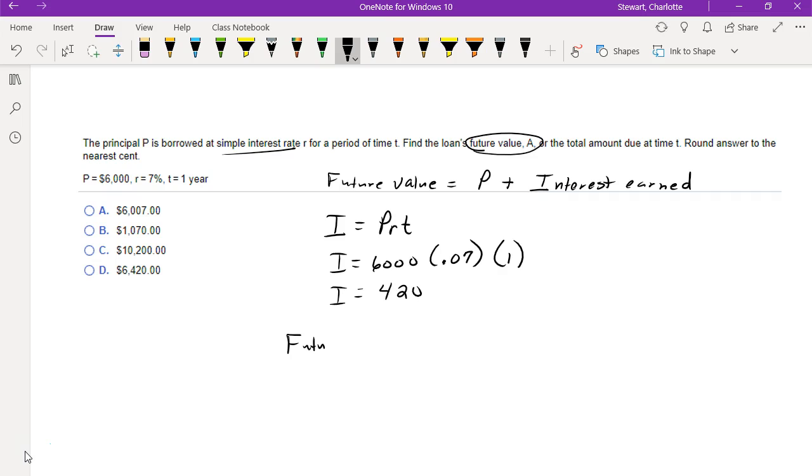Now, the future value would be the original principal of $6,000 plus this interest that we would have earned. So the future value is $6,420.